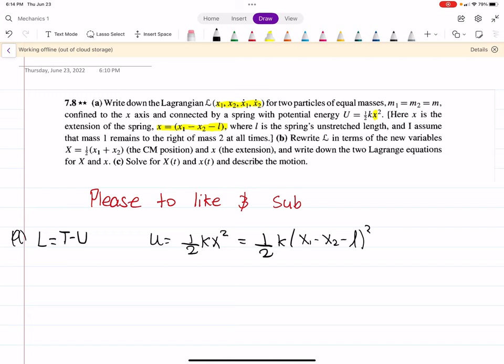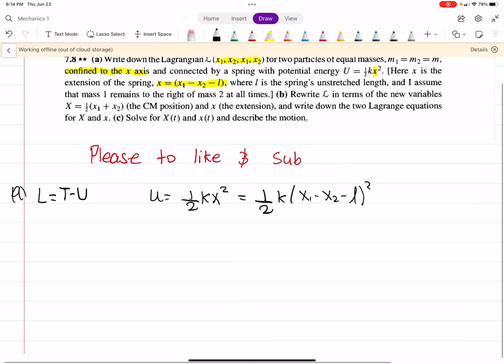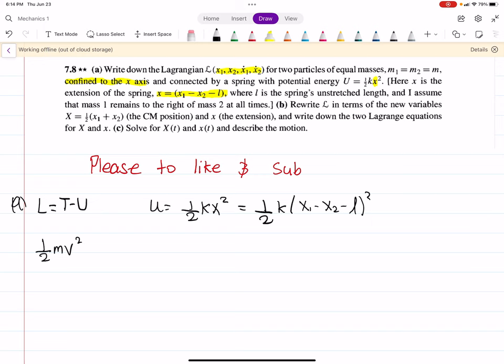Okay. The kinetic energy, now it mentions that it's confined to the x-axis. So 1 half mv squared. In this case, velocity has x, y, z components. But again, it's confined to just the x component, the x-axis. So this is just 1 half m. And there's two particles. So we'll say x1 dot squared plus x2 dot squared. Since there's two particles. But both are still in the x.